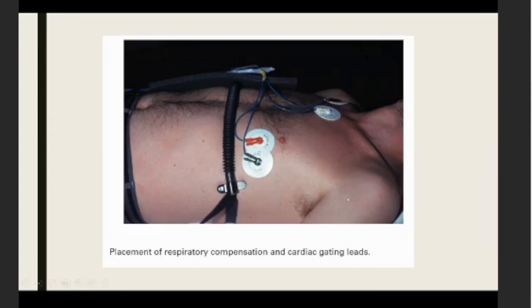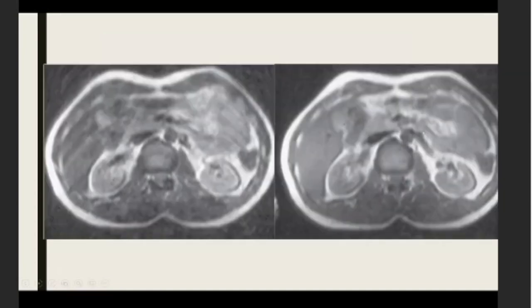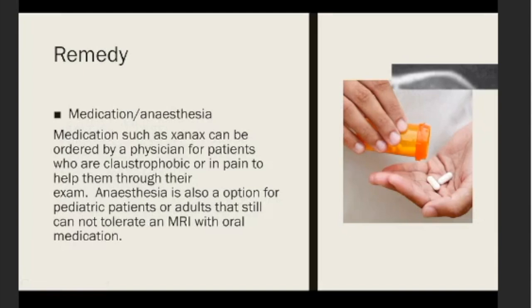As shown in this picture, the trigger line in black is used to define the breath cycle, and here are the cardiac gating leads. On the left side is the image taken without respiratory gating or compensation technique — the ghosting artifact is visible all over the image. On the right side, we used a trigger and respiratory compensation technique, which gives a very good image.